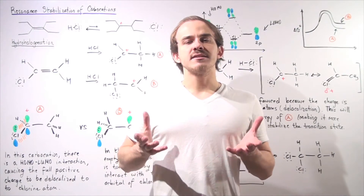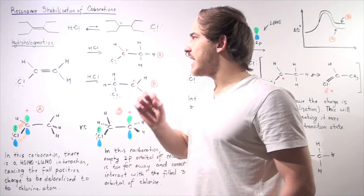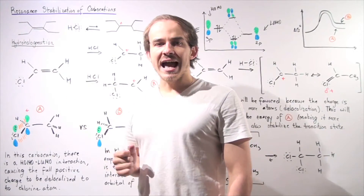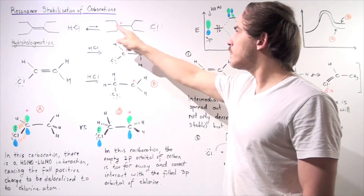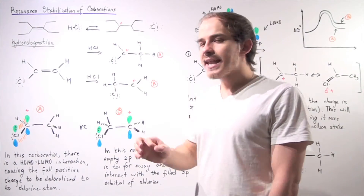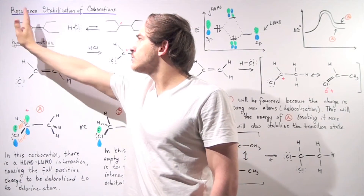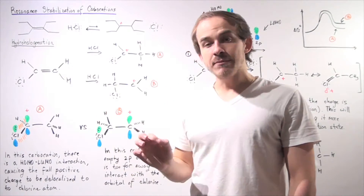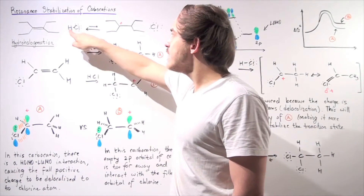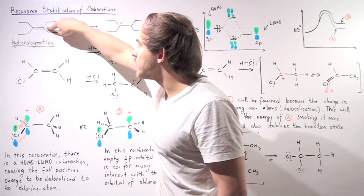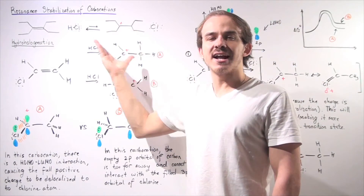In the previous lecture, we began a discussion on hydrohalogenation and we looked at a reaction in which an alkene reacted with an HCl molecule to produce a carbocation intermediate. Because this alkene is a symmetrical alkene, the left side and right side are exactly the same. So it did not matter where the H added — whether to this carbon or that carbon, we produce the same exact carbocation intermediate.